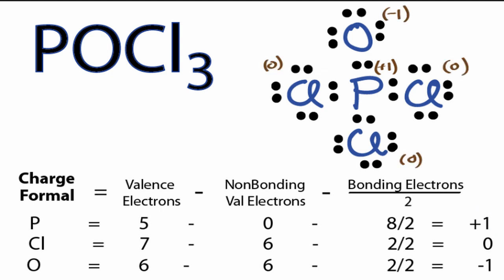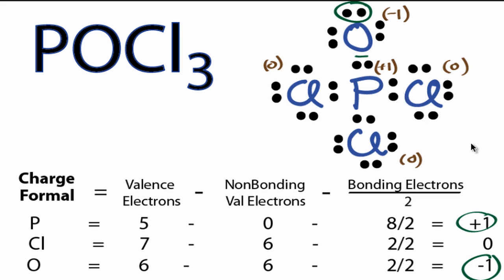This might not be the best structure for POCl3. We see this plus 1 on the phosphorus, and then we have a negative 1 on the oxygen. We know we can move these 2 valence electrons to form a double bond right here with the oxygen. By moving the 2 valence electrons here into the center, we formed a double bond. You can see that the formal charges for each of the atoms is now 0.